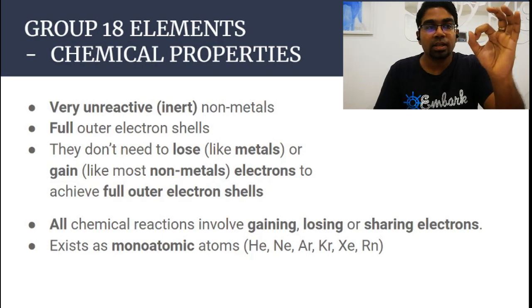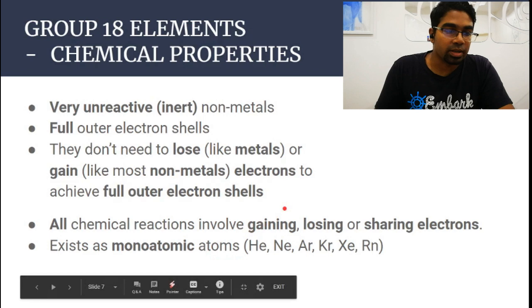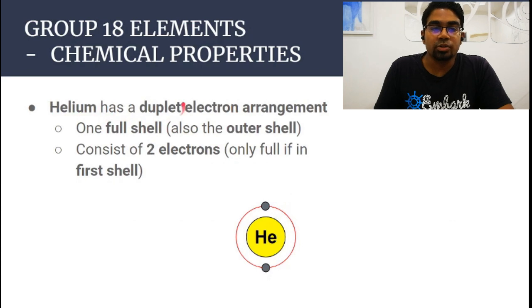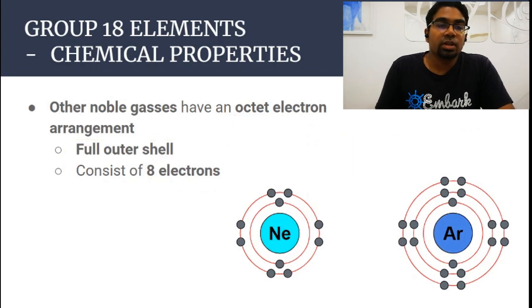Monoatomic atoms - mono means one. They exist as single atoms. That means a gas jar of helium atoms will contain single helium atoms. Helium's electron arrangement is known as the duplet electron arrangement because it consists of two electrons and it is full. For everything else, they have eight electrons and are going to be called the octet electron arrangement.